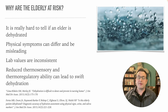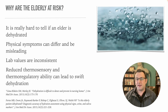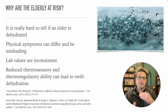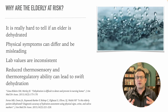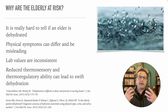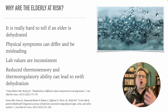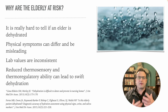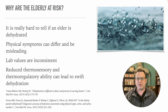Reduced thermosensory and thermoregulatory ability can lead to swift dehydration. And this is a cyclical issue — decreased thermoregulatory ability leads to dehydration, and a decrease in hydration status causes difficulty in thermoregulating, which leads to more problems. It's just another downward spiral.